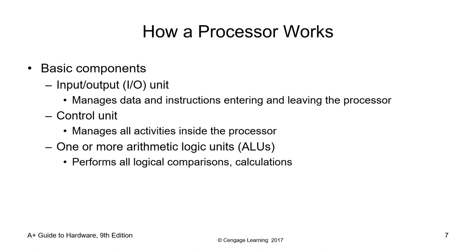How a processor works — basic components. You have the I/O (Input/Output) unit, which manages data and instructions entering and leaving the processor. The control unit manages all activities inside the processor and is the main controller of the CPU. The Arithmetic Logic Unit (ALU) is capable of performing all mathematical calculations and logical operations. All of these components exist within the processor.